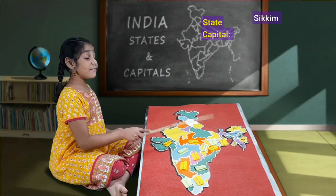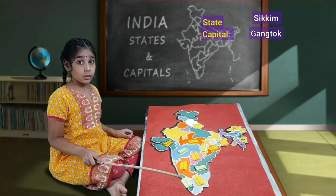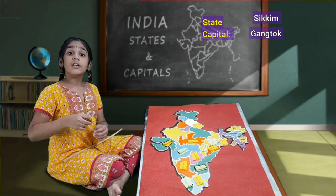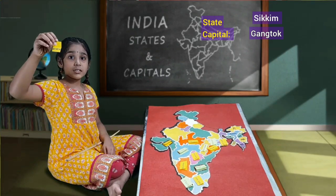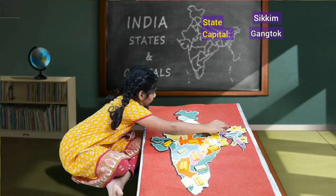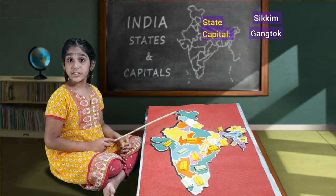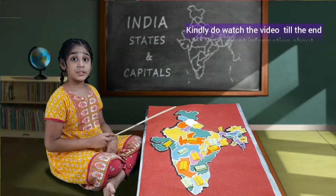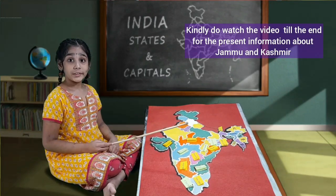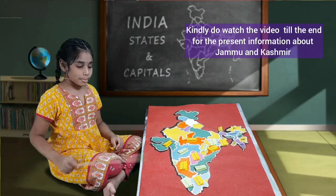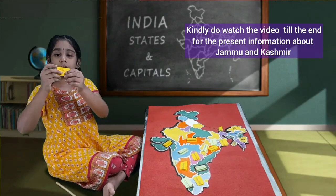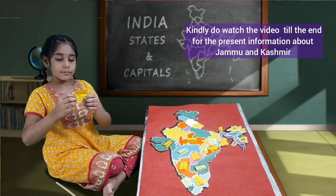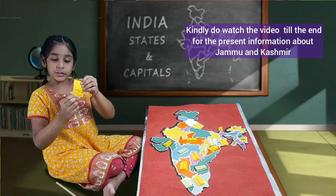Above West Bengal, we'll have Sikkim. Sikkim's capital is Gangtok. This is Sikkim. If we open this, we'll have Gangtok as capital. Now let us move to Northern states. First, we'll start with Jammu and Kashmir. Jammu and Kashmir's capital in summer is Srinagar, and in winter it is Jammu. This is Jammu and Kashmir. If we open this, we'll have summer capital as Srinagar and winter capital as Jammu.